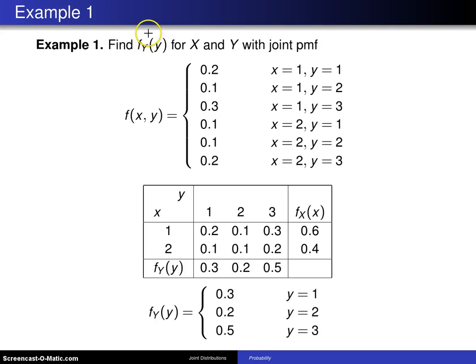Here's an example of finding the marginal probability mass function for discrete random variables X and Y having joint probability mass function f(x,y) equal to these six values over six points in the support.